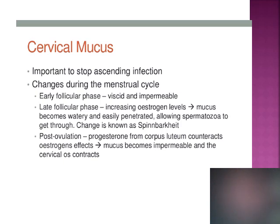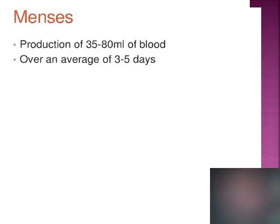After ovulation, progesterone has the opposite effect — the mucus becomes impermeable and the cervical os also contracts. The average blood loss during the menstrual cycle is 35 to 80 ml; bleeding more than 80 ml is considered heavy menstrual bleeding. On average, the bleeding lasts 3 to 5 days. That's all for today — I hope you enjoyed the lecture. If you have any queries, you can ask.